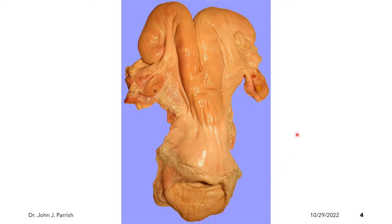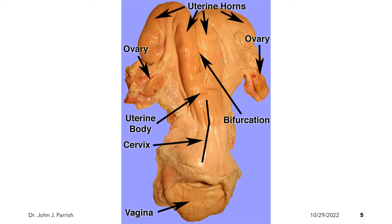This is the dorsal view of the cow or heifer reproductive tract. These are the general parts that can be found in the reproductive tract of a cow or heifer. Starting from one portion, we have the ovary, then the uterine horns. We have two uterine horns, and in between them is the bifurcation. After that we have the uterine body, the cervix, and the vagina.